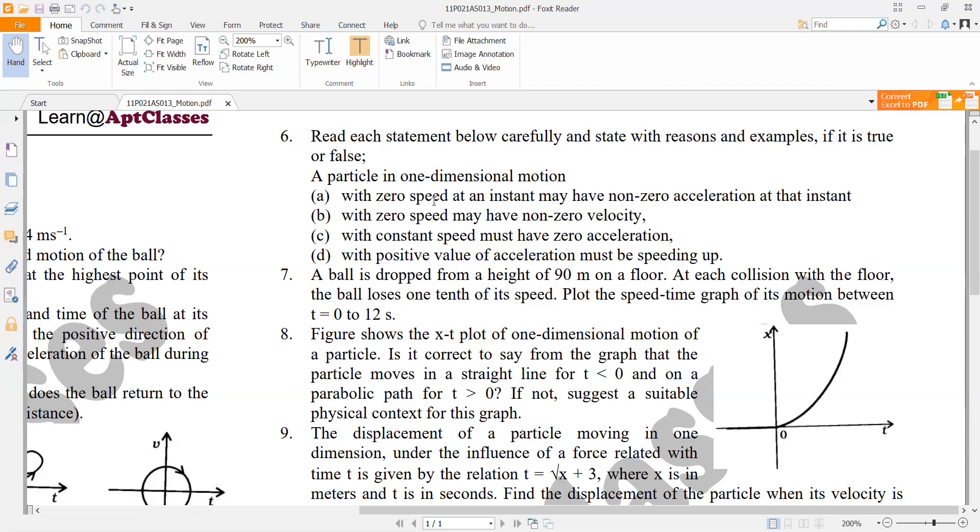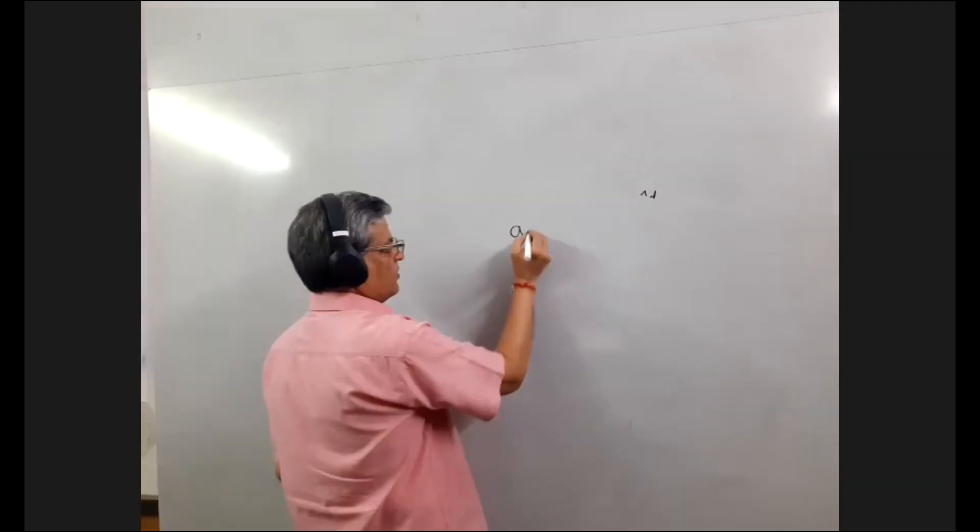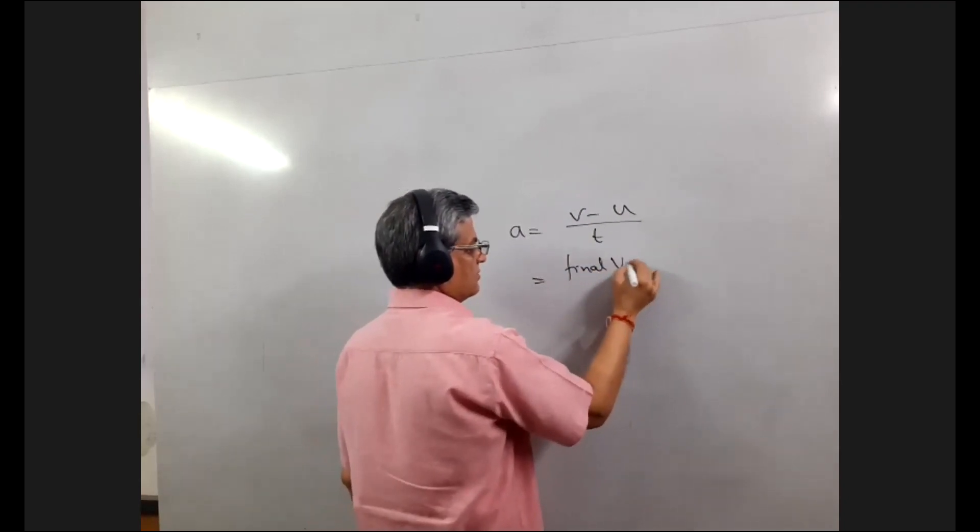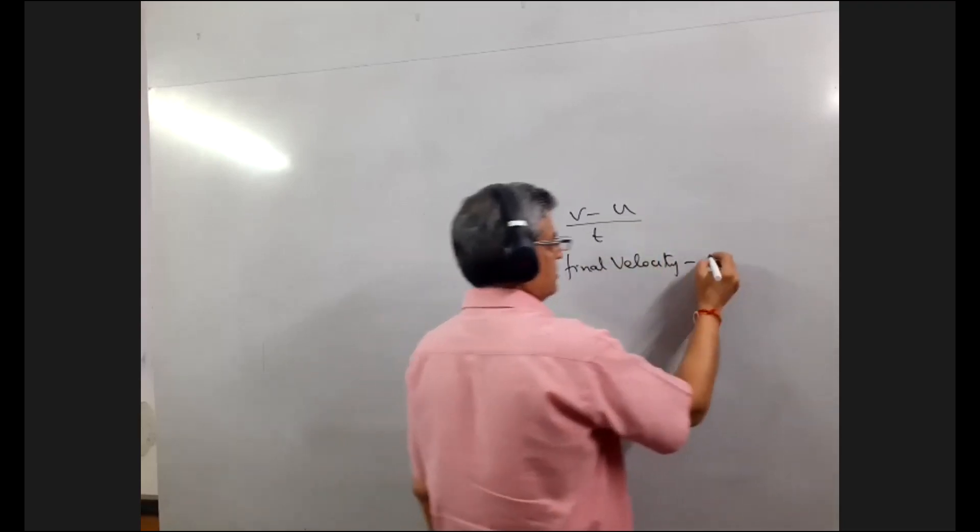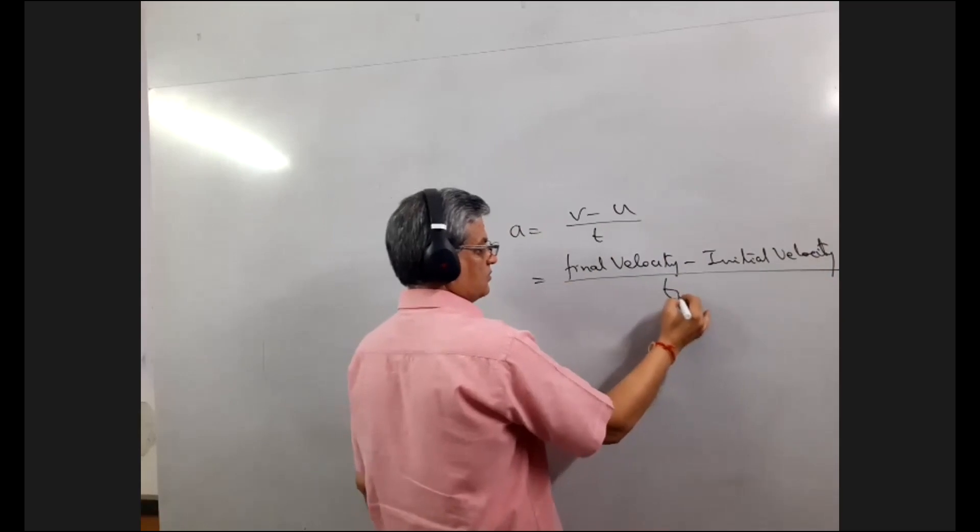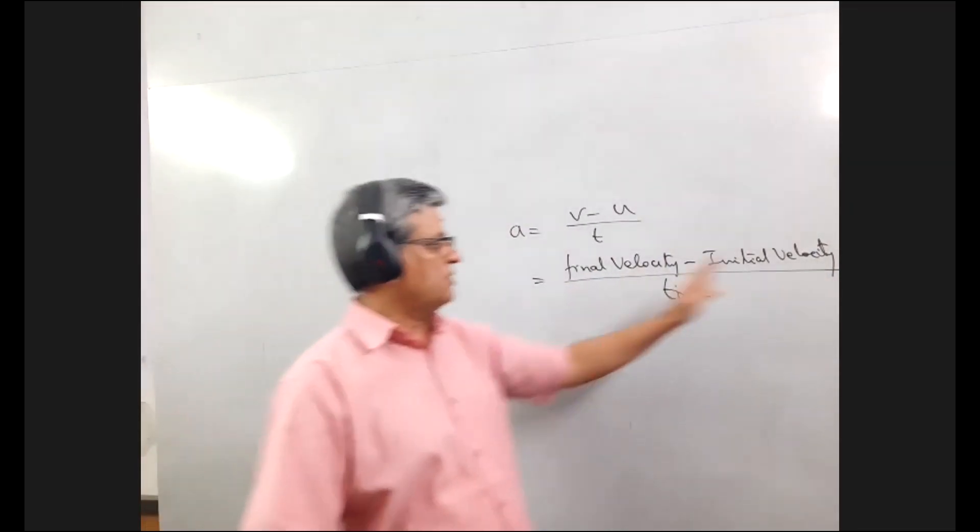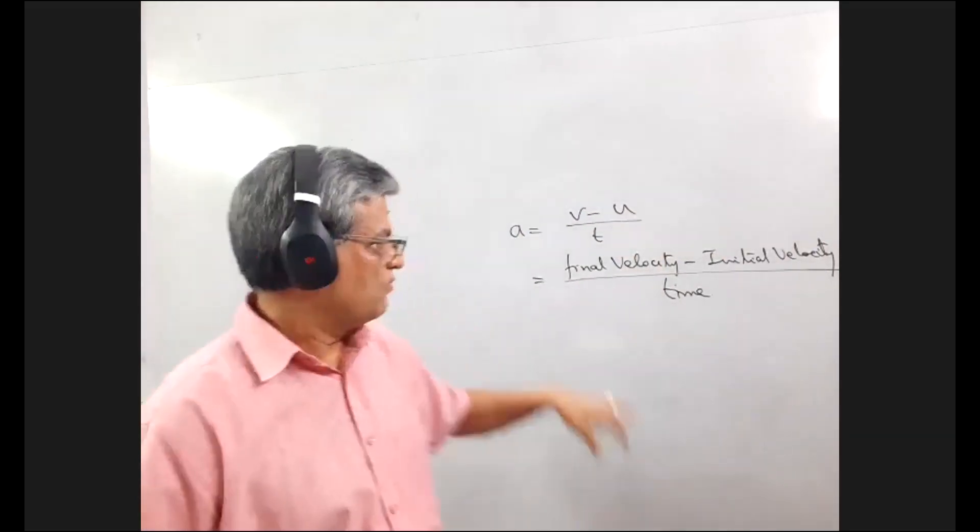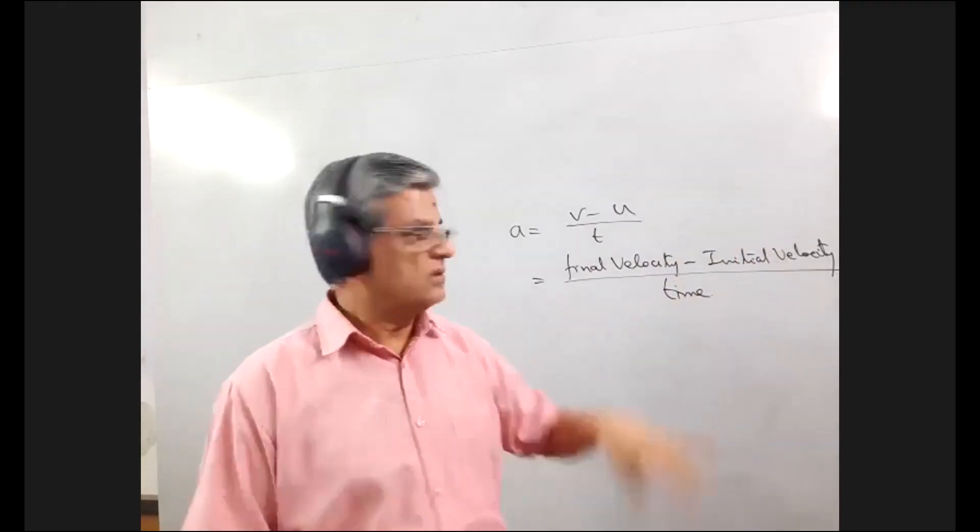In uniform circular motion the body has constant speed but it is under constant acceleration. This statement: with positive value of acceleration, must the body be speeding up? Acceleration is v minus u upon t, where v is the final velocity and u is the initial velocity. If this is positive, then the final velocity is greater than initial velocity.